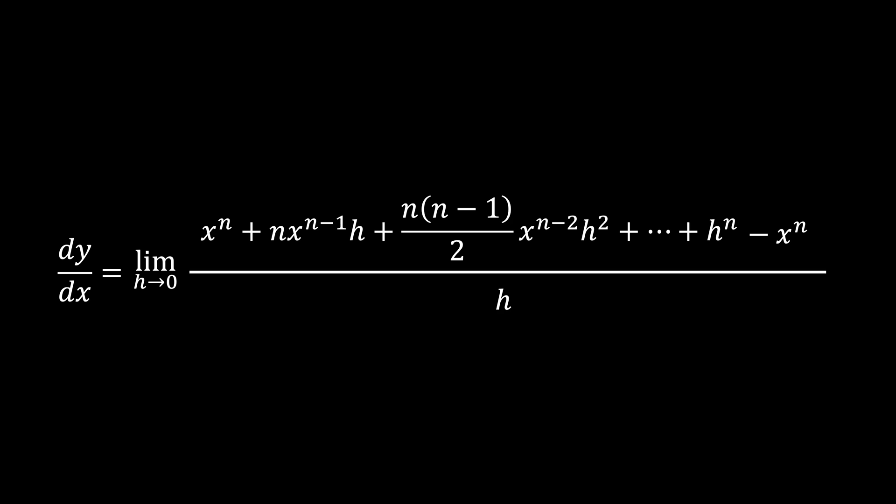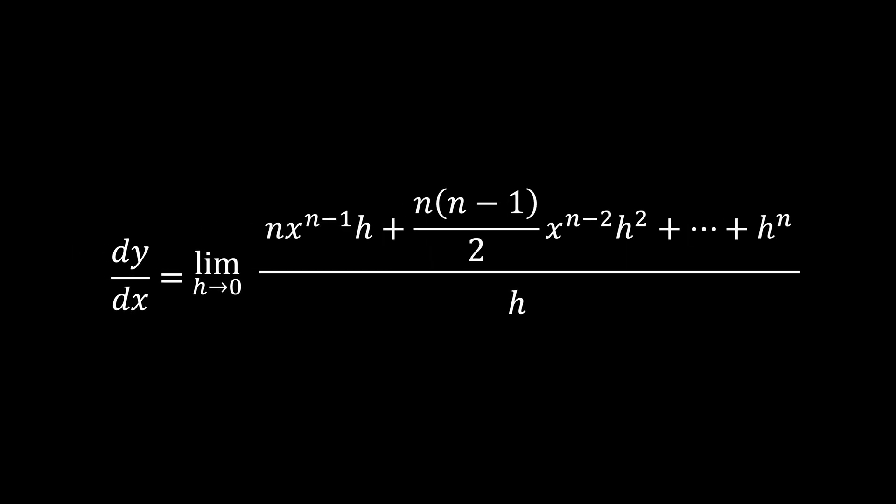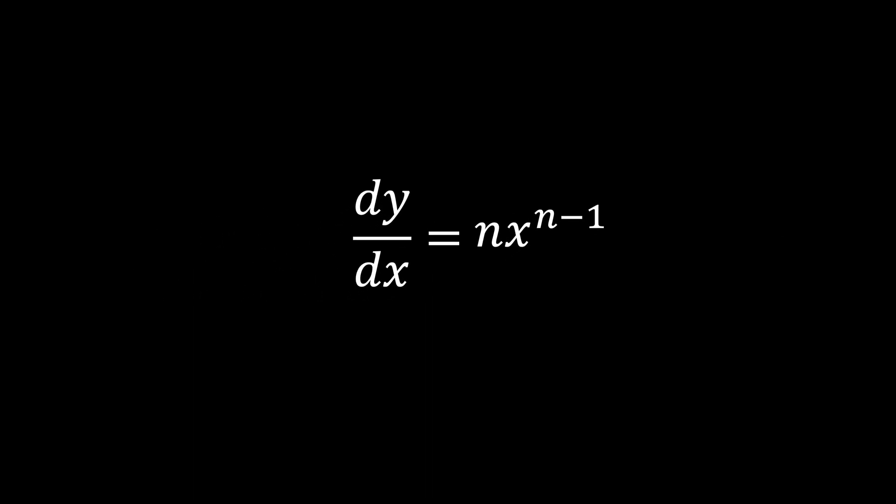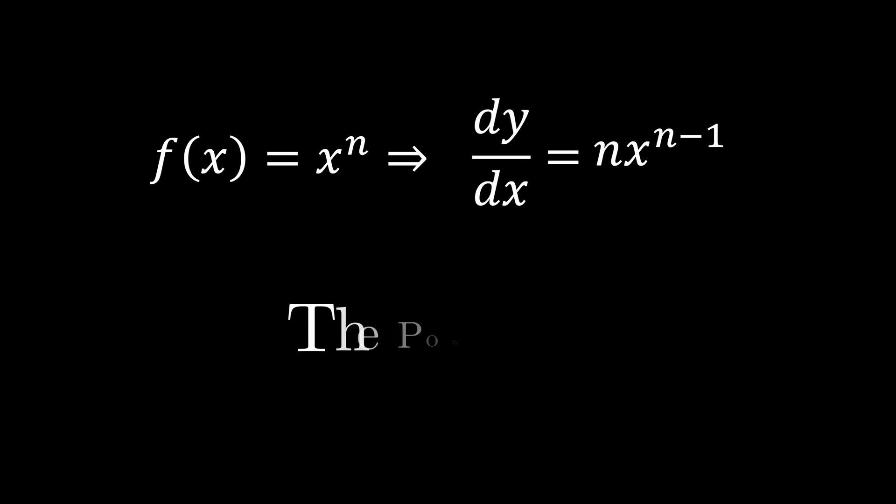When we simplify, the x to the power of n terms and the terms involving h cancel out as h tends to 0, leaving n times x to the power of n minus 1. This is called the power rule.